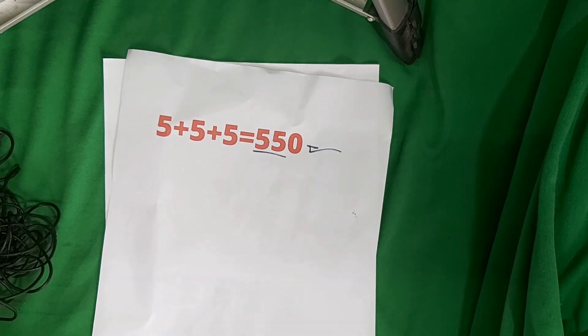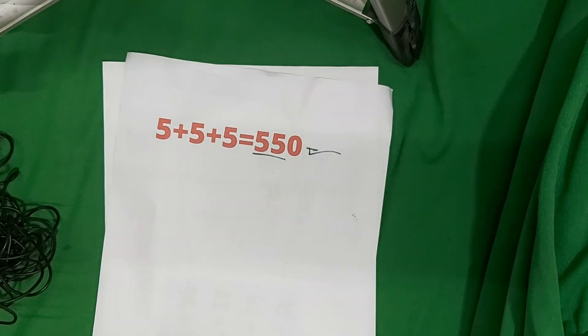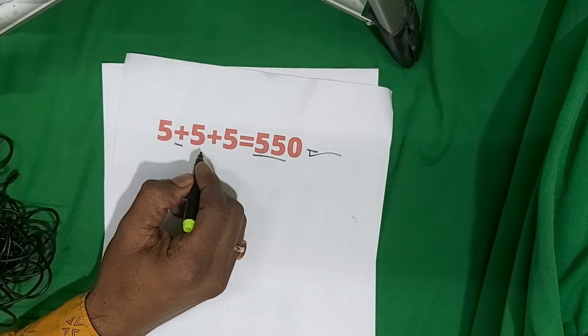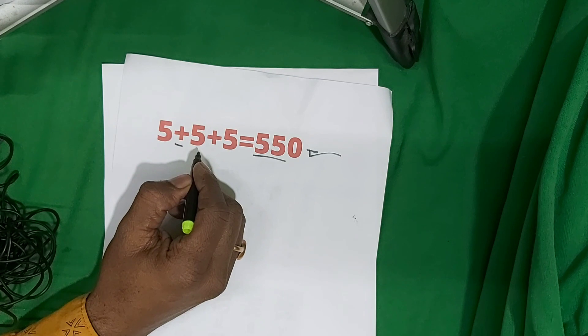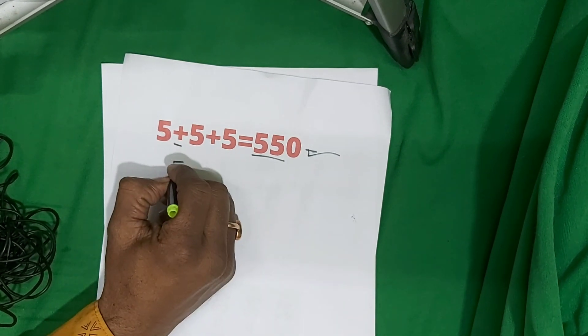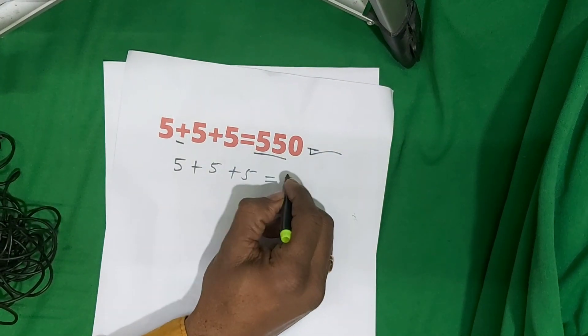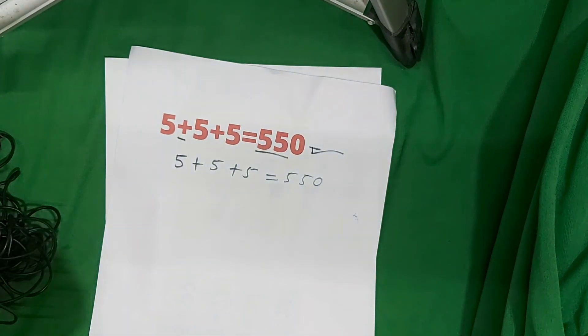How can we prove this by changing and adding a simple line for this question? See here, the plus symbol on the left side, add a line diagonally and that changes it. See, now 5+5+5 equals 550. It is not possible anyhow.